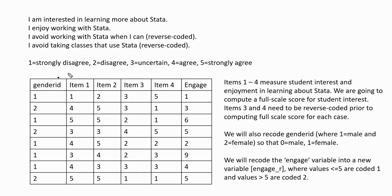The first variable is gender ID, or gender identification, and it has values of 1 and 2. A value of 1 indicates that a person identified as male, and a value of 2 indicates a person identified as female. What we will be doing as part of our demonstration is recoding this gender ID variable so that a value of 0 indicates male and a value of 1 indicates female.